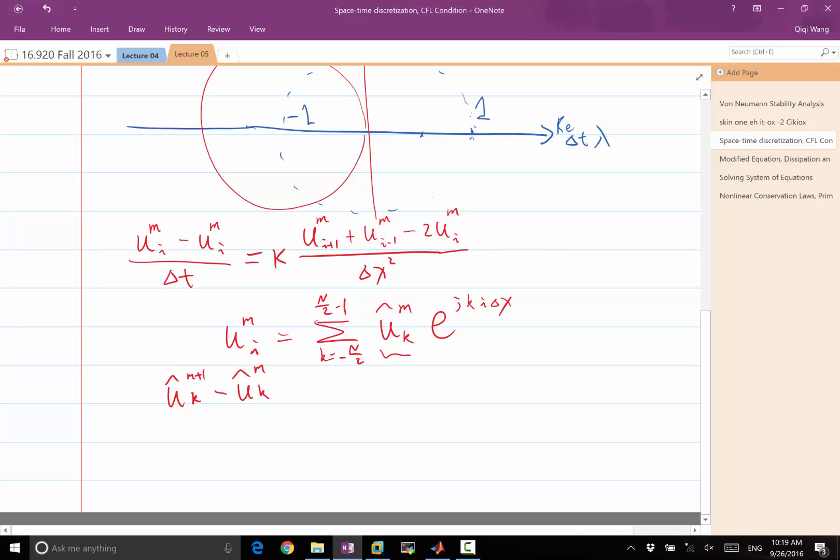This equals kappa times my 2 cosine k delta x minus 2 divided by delta x squared times u hat of m k.